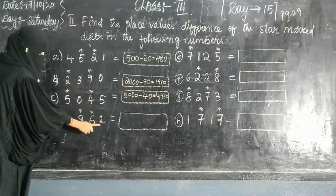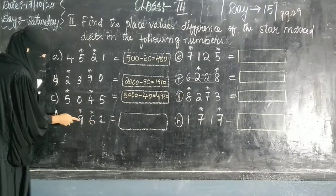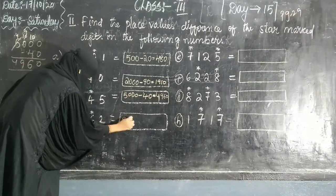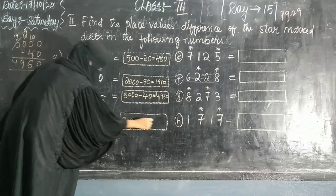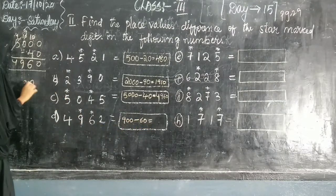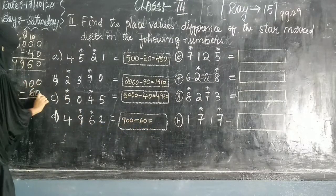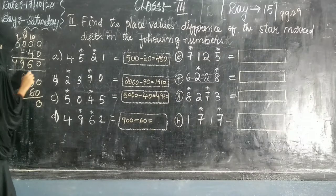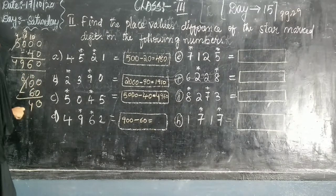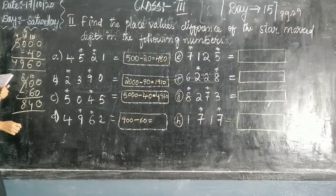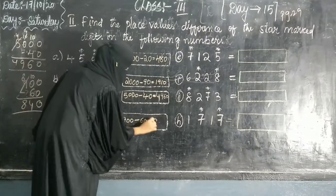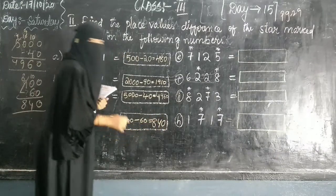Next, 1 stands for 100. Nine in the hundreds means nine hundred. Nine hundred minus sixty. Here 10, 8 minus nothing — we write 8, 4, 3. The answer is 840.